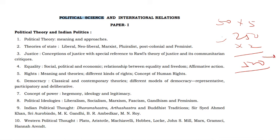In Paper 1 there are two parts. One is political theory and the second is Indian politics. In political theory there are: meaning and approaches — different types of traditional approach, modern approach, normative, empirical and all; theories of state — the concept of state, which requires a fixed border, territory, population and government — liberal, neo-liberal, Marxist, pluralist, post-colonial and feminist theory of state.